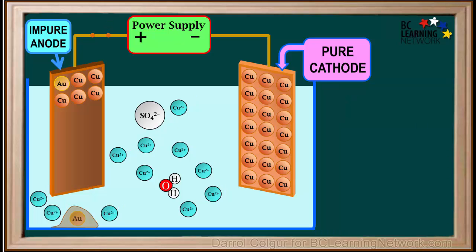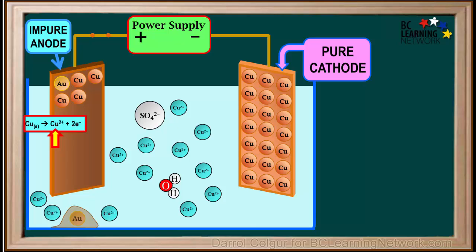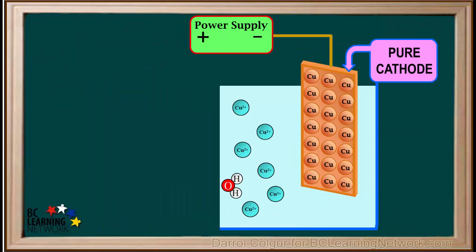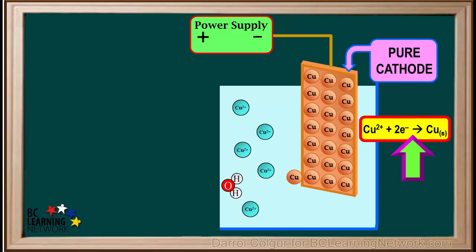Remember, while the cell is operating, copper atoms are being oxidized at the anode, and Cu 2 plus ions are continuously added to the solution. So Cu 2 plus ions in the solution are never depleted. Focusing on the cathode, as a cell operates, Cu 2 plus ions will be attracted to the negative cathode and will be reduced to neutral copper atoms. The equation for the reduction of Cu 2 plus is Cu2+ plus 2 electrons give Cu solids.